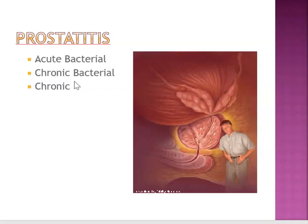Signs and symptoms of acute bacterial prostatitis are fever, urinary frequency, urgency, dysuria, and a dull aching pain in the perineum or the prostate gland. It can also be pain in the rectum or the back. The prostate becomes enlarged and it's painful upon rectal exam.